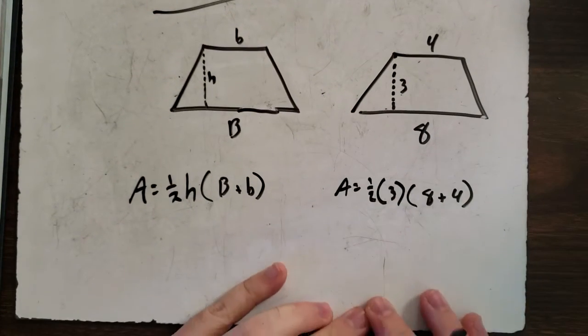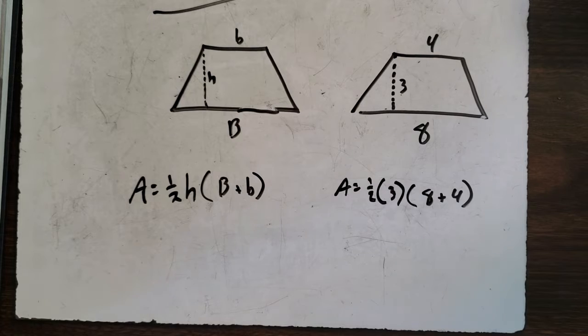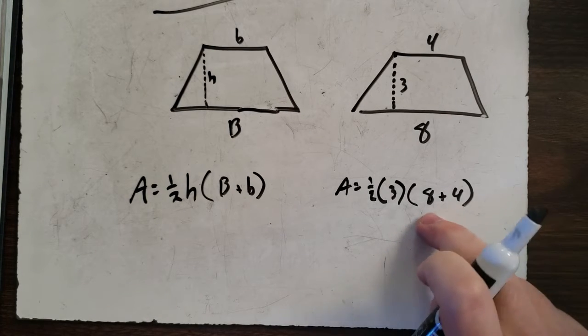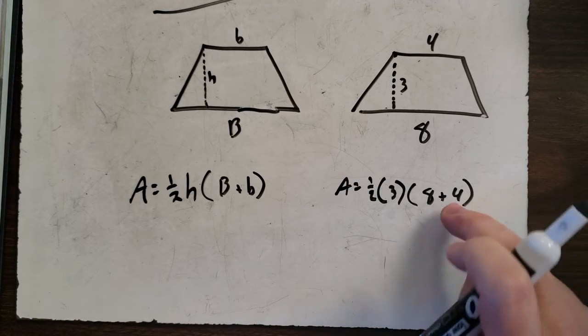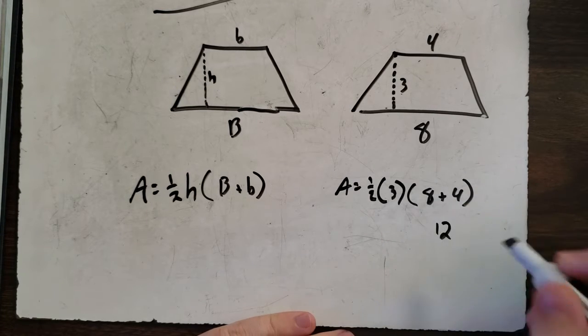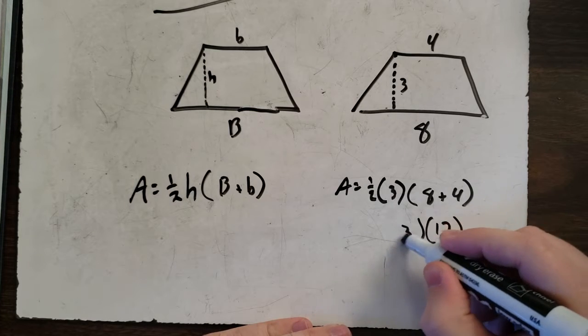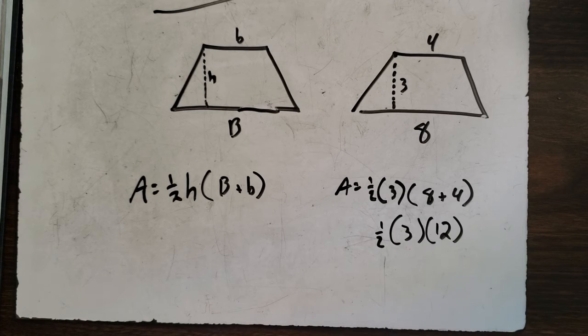Let's just do the math. Now remember, order of operations. What do we do first? You do the parentheses first. Here are your parentheses. We can do eight plus four. Eight plus four equals 12. Bring that down with everything else.